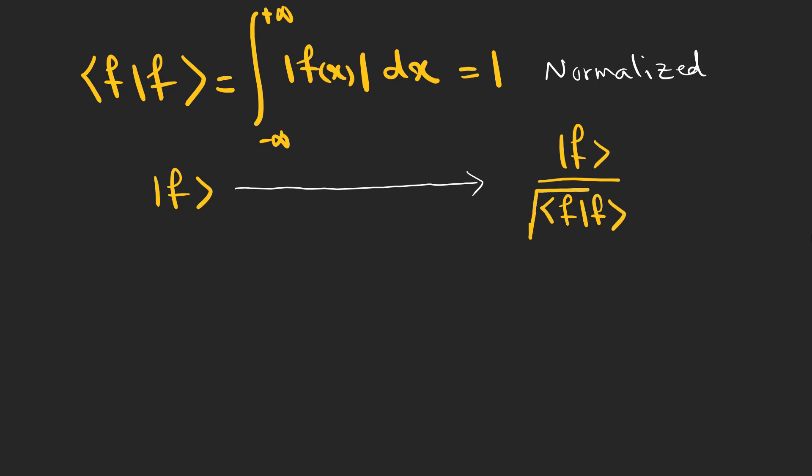So, to normalize a function, we can divide it by the square root of its inner product with itself. If the inner product of two functions is zero, they are called orthogonal.